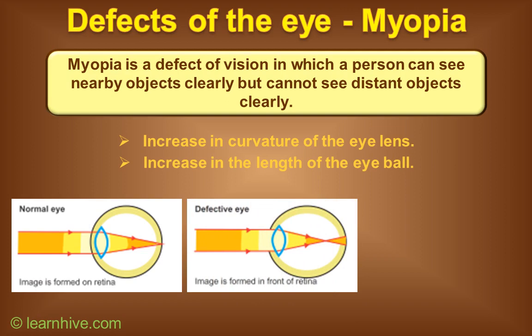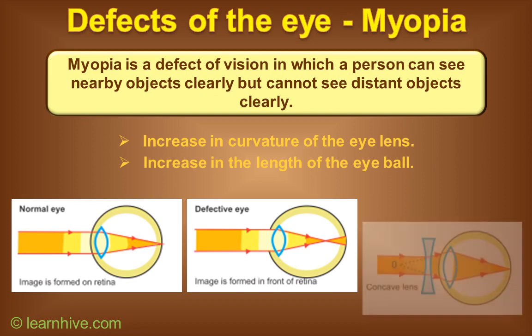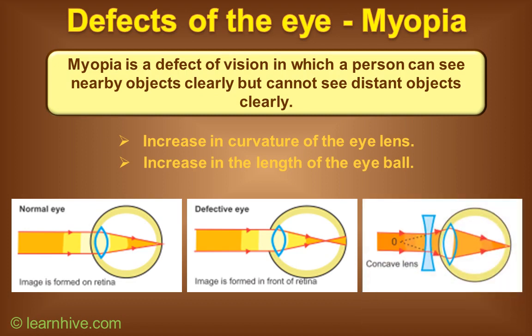So for a myopic person, the near point of the eye increases and they are unable to see objects clearly. Myopia can be corrected by using a concave lens of suitable focal length. The concave lens diverges the rays from a far-off object so that they appear to come from the far point of the defective eye, and a sharp image is formed on the retina.